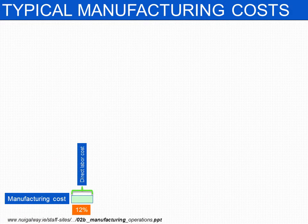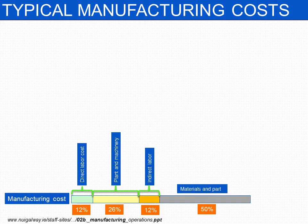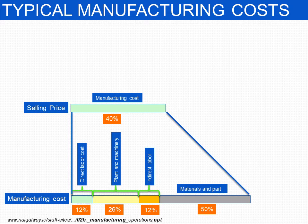A typical product contains 12% of budgeted cost spent on direct labor cost, 26% on plant and machinery, 12% on indirect labor cost, and 50% of the budgeted cost on material and part cost. All of this together forms 40% of the total manufacturing cost. By looking at this split, materials are the typical area where you can focus on optimizing cost.